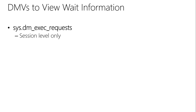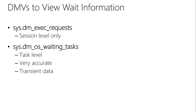To view these waits, we use dynamic management views. The first is sys.dm_exec_requests — think of it as a replacement for sp_who from previous versions, returning who's doing what. It provides wait information at the session level. If you think of a parallel query that spawns multiple tasks, dm_exec_requests works at the session level only, so you won't see wait types for more than one task at that level.